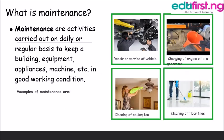What is maintenance? Maintenance is an activity carried out on a daily or regular basis to keep a building, equipment, appliance, machine, etc. in good working condition. From the picture you can see these are examples of maintenance: repair or servicing of a vehicle, and the second diagram shows changing of engine oil in a generator — that is also maintenance.